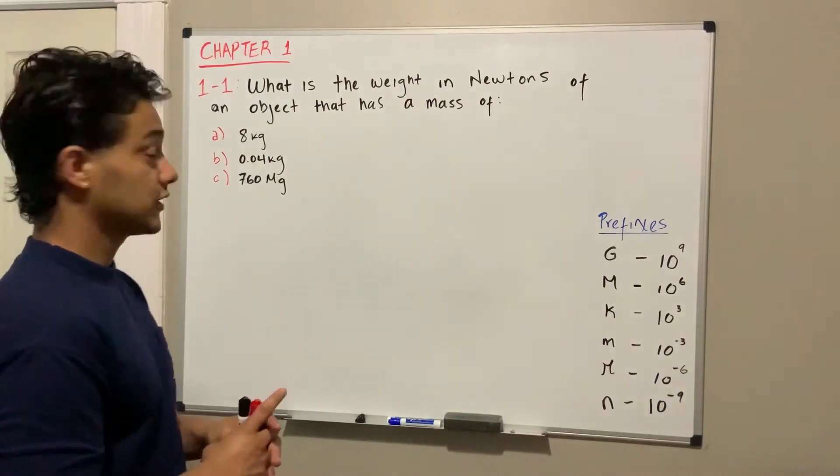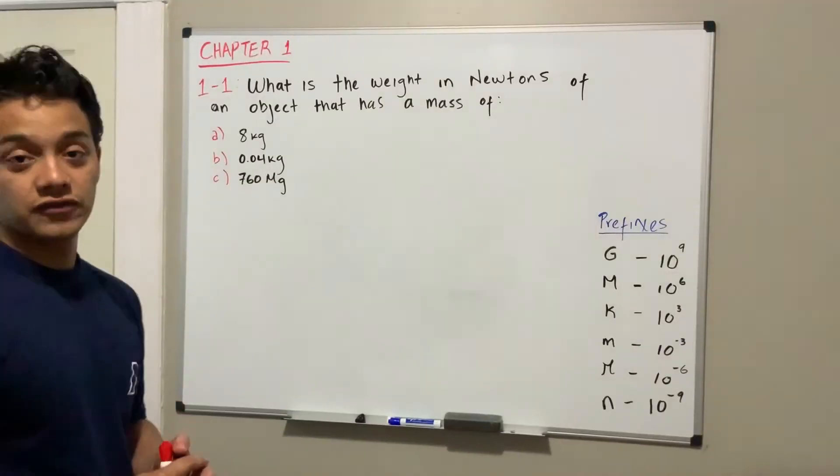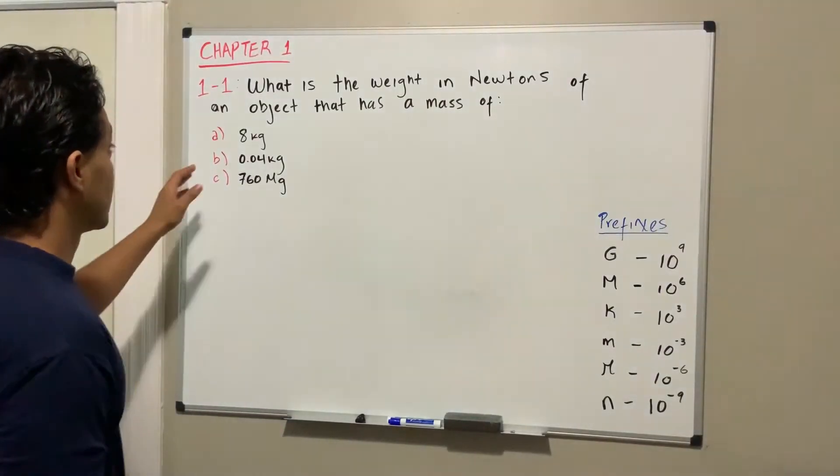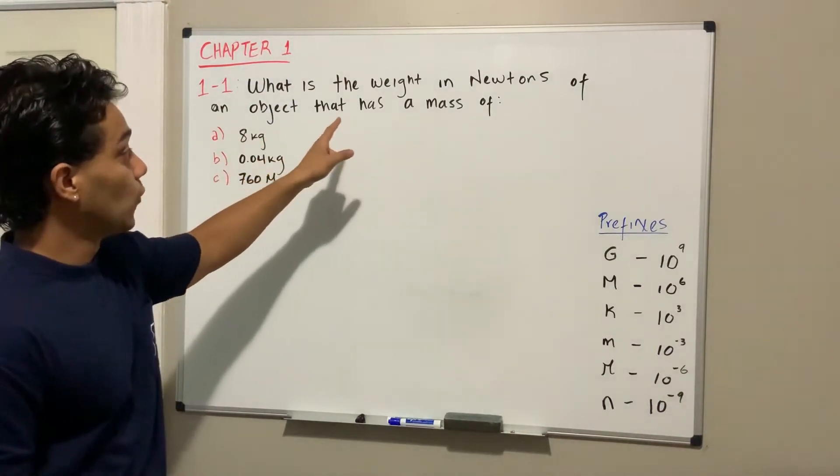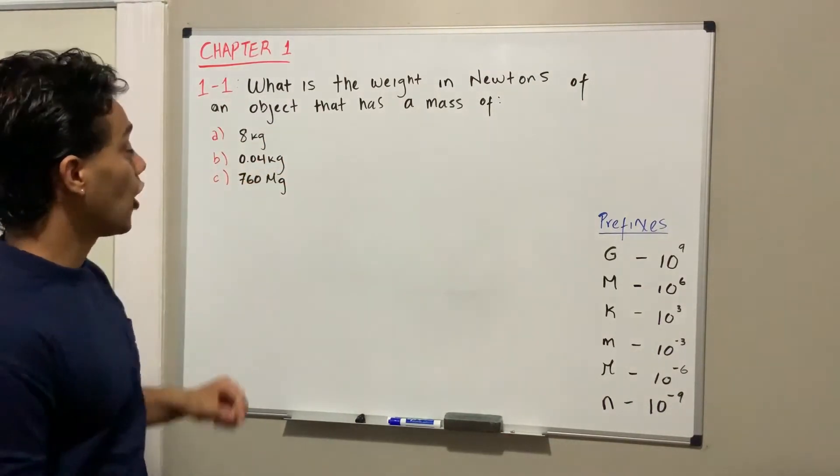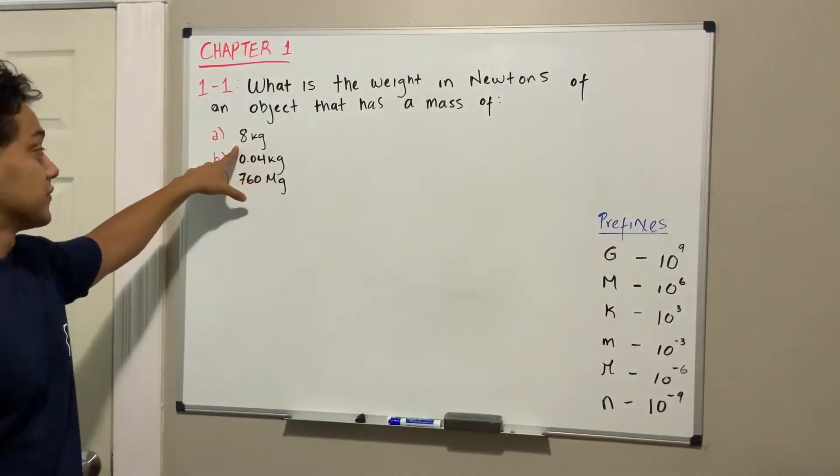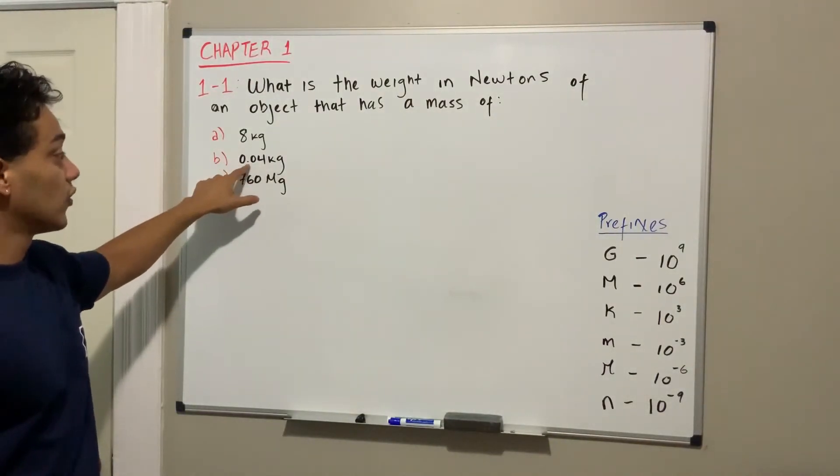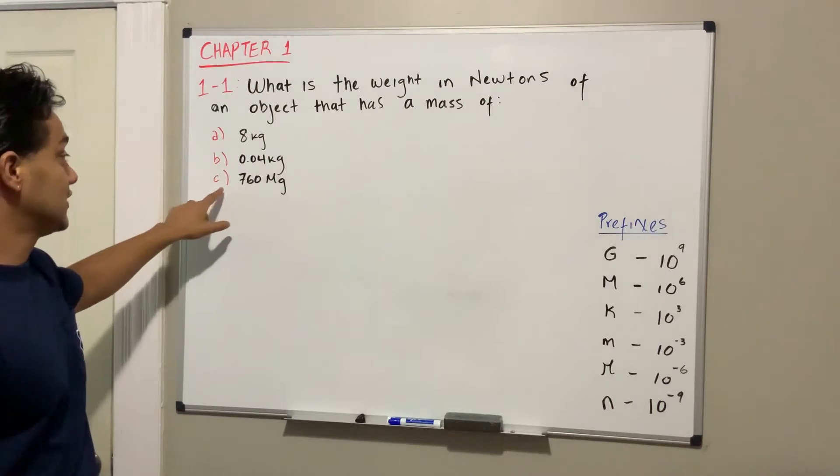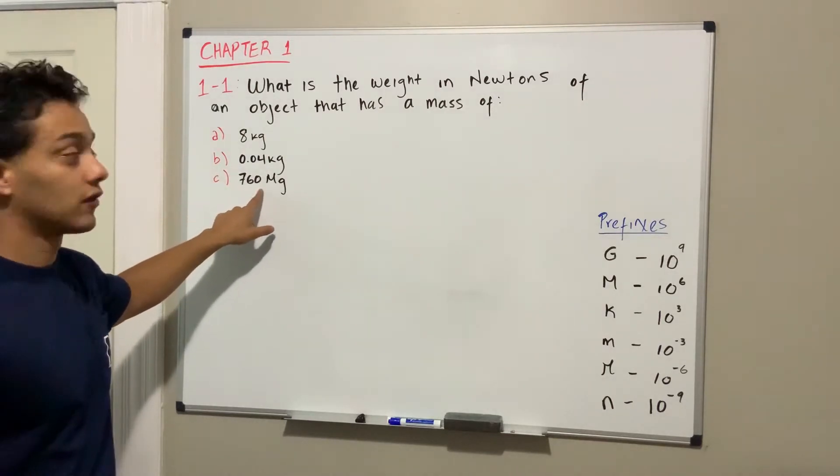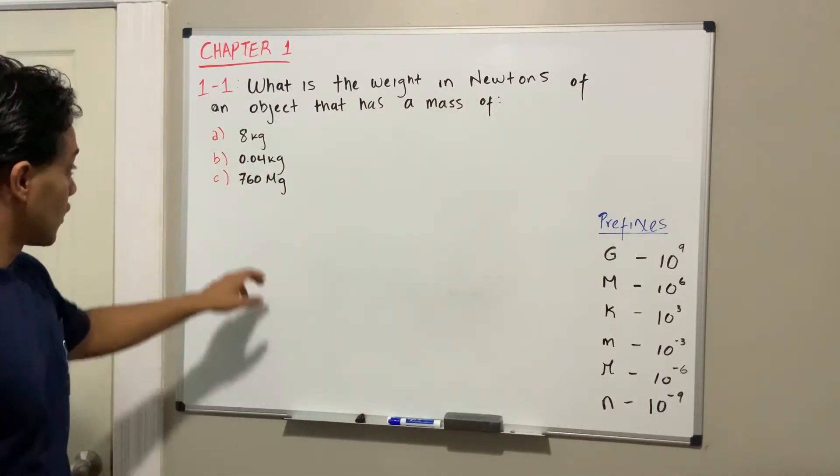We're gonna start with the first question of chapter 1, which says: What is the weight in Newtons of an object that has a mass of: a) 8 kilograms, b) 0.04 kilograms, c) 760 megagrams?